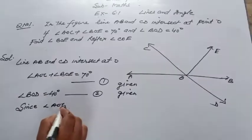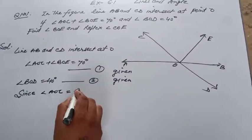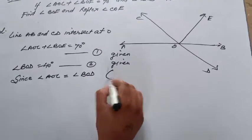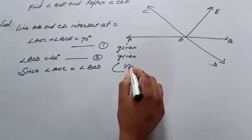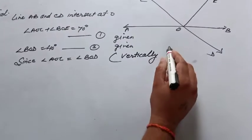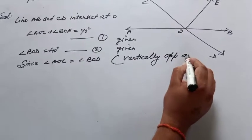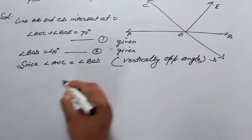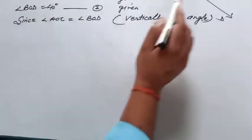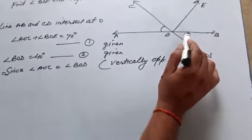Since angle AOC is equal to angle BOD by the property of vertically opposite angles, these two angles AOC and BOD are vertically opposite, so they are equal.